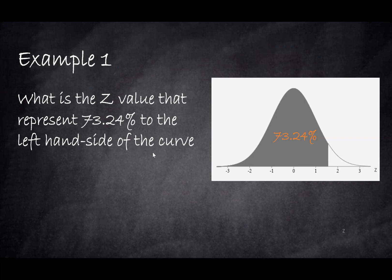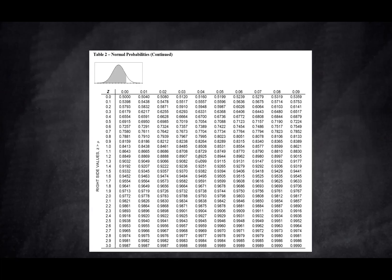We can go to the Z table that represents the left-hand side area of the positive numbers, because we see 73.24% falls in the positive numbers area, and we can look inside the table for that specific value. So here it is, 0.7324. This is 73.24%.